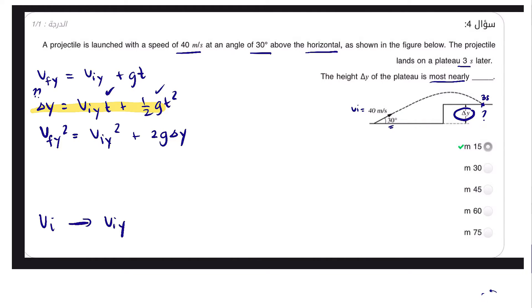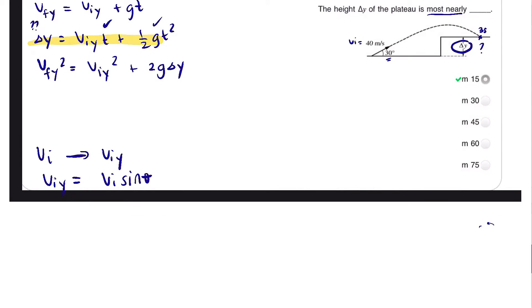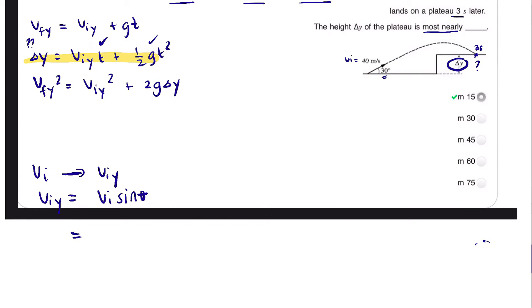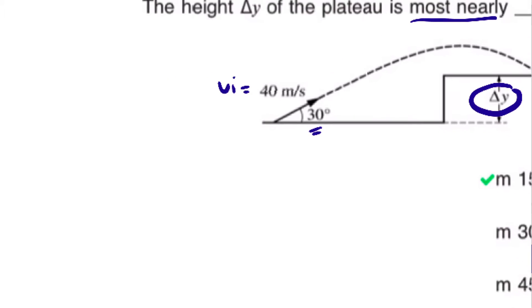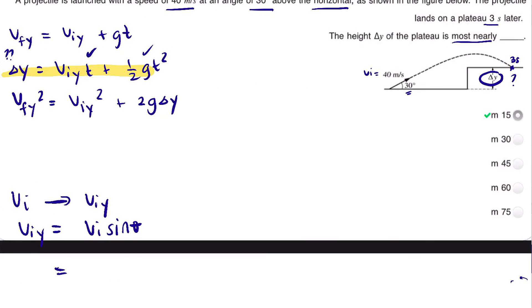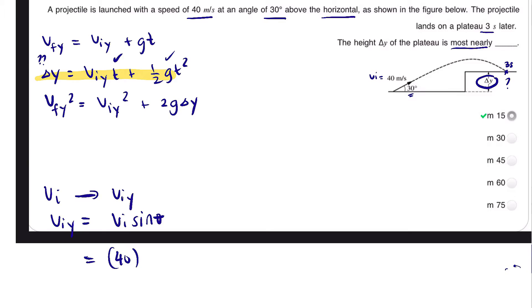Now let's solve for the initial vertical velocity viy. According to the equation, viy = vi sin θ. Substituting our values: vi is 40 meters per second and the angle is 30 degrees, so 40 times sine of 30 degrees equals 20 meters per second.